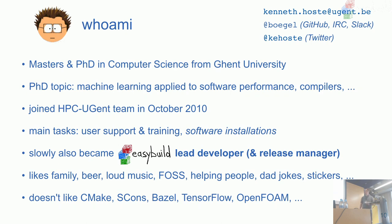A little bit about me: you can find me on GitHub, Slack, and Twitter. I got my computer science degree at Ghent University in Belgium and was working with machine learning before it was cool — back in the 2005 era. When I joined the HPC team in Ghent in October 2010, I was assigned to user support and training, which involves a big part of software installations. EasyBuild was already there, and we took it further by releasing it publicly.